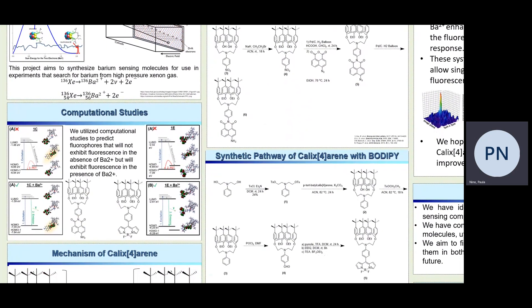Looking at our computational studies, we would utilize computational studies in order to predict which fluorophores would fluoresce in the presence of barium ions. The figures laterally display the effects of barium ions binding to the calixarene. The barium ion binding creates a pi overlap between the benzyl linker and the fluorophore, therefore allowing the emission of a photon.